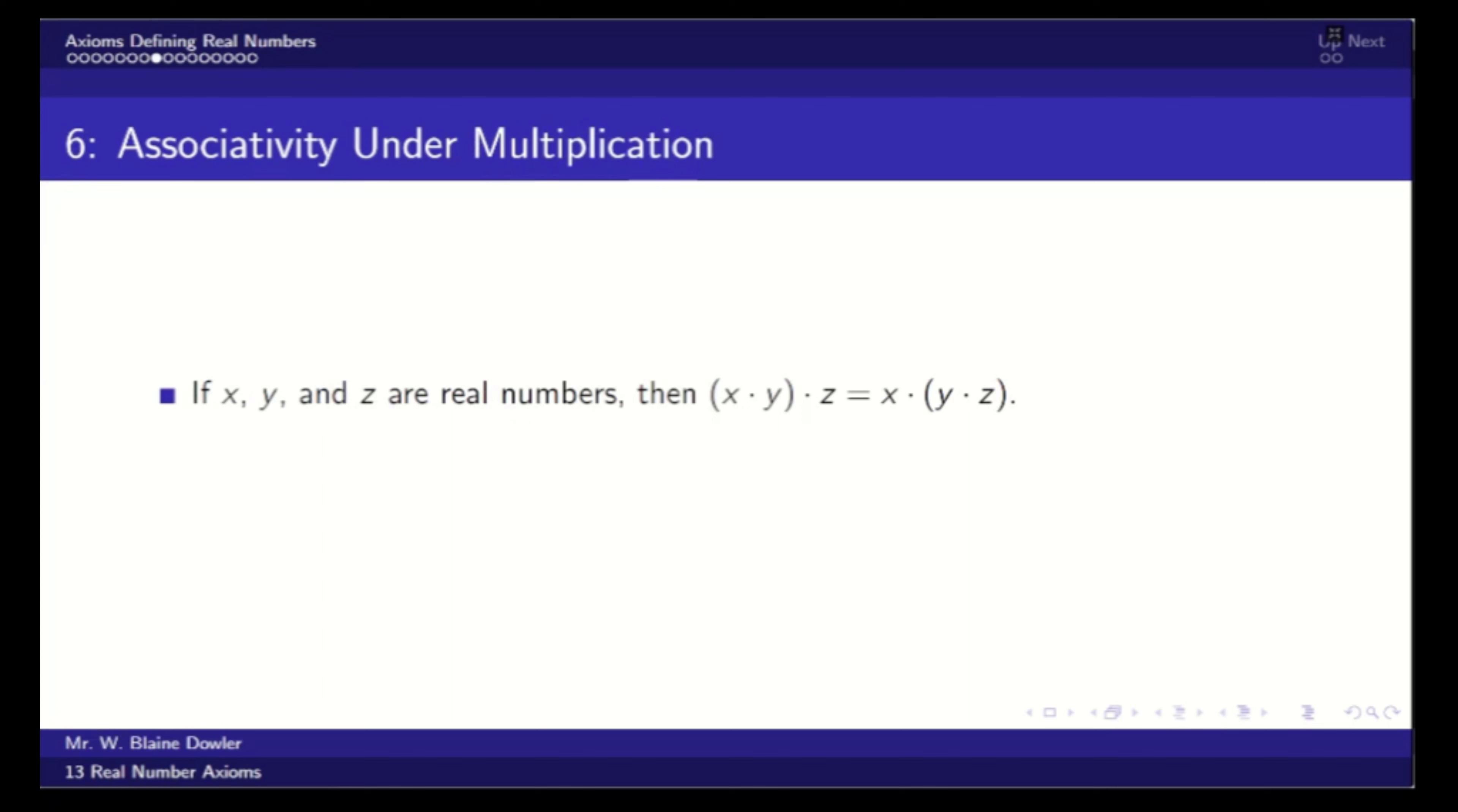So if we're doing multiplication, again, associativity, we can associate either pair first. The numbers are two, three, and four. Well, six times four is 24, and two times 12 is 24. Again, infinite products will break this.